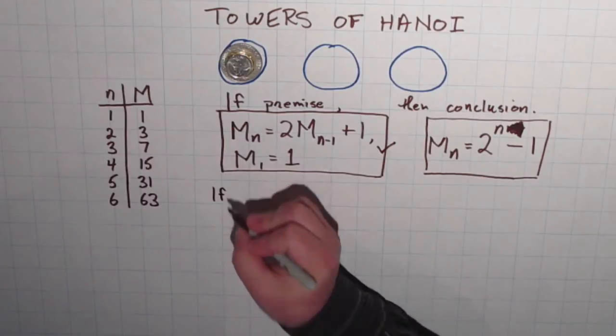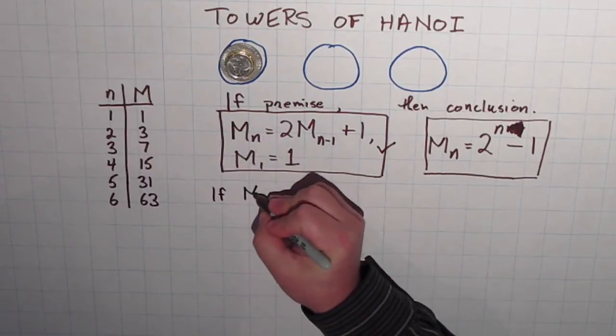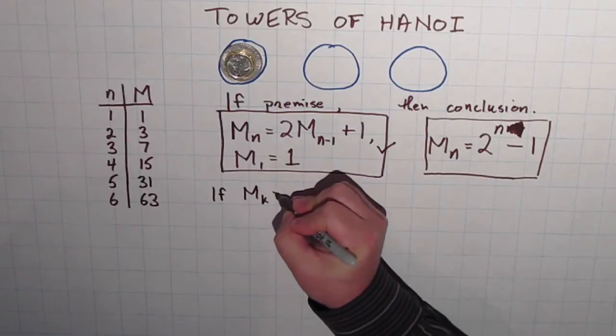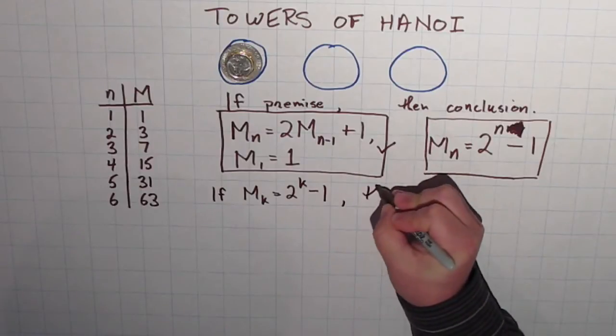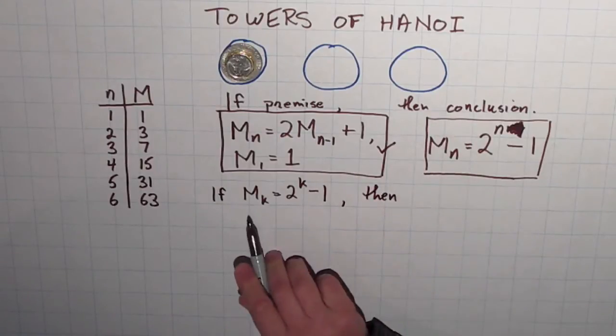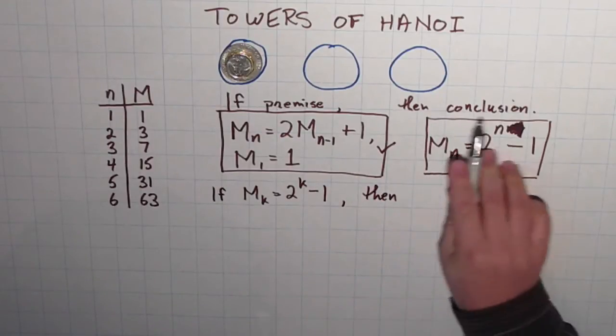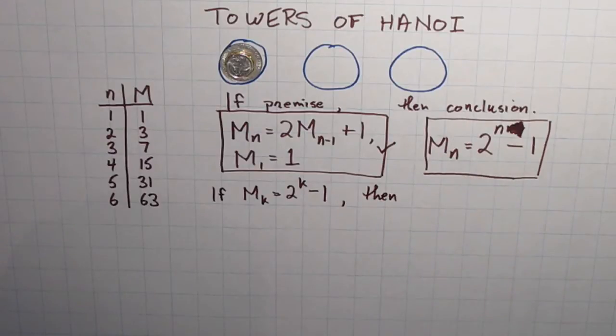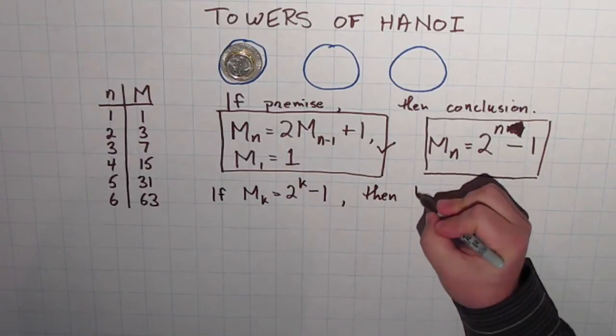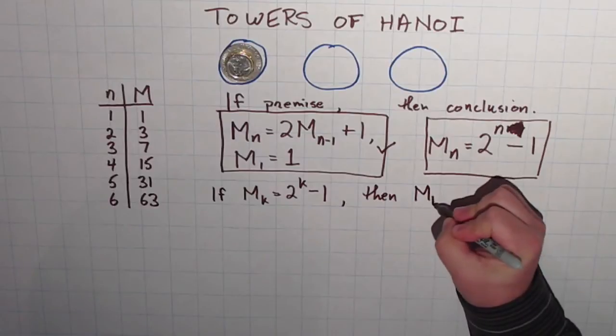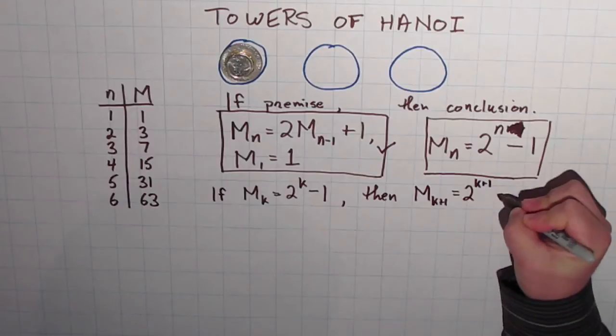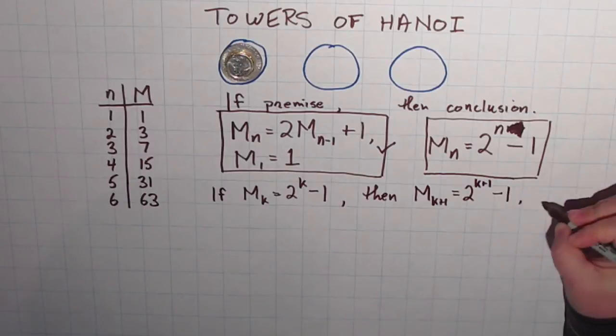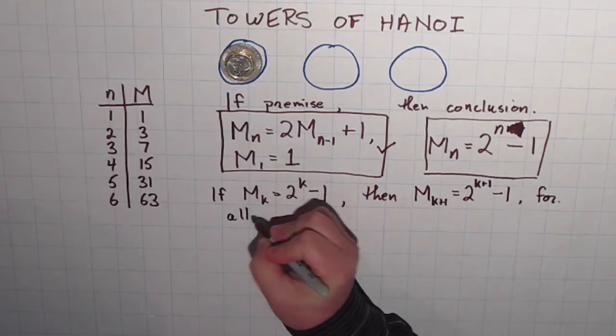I want to prove this statement. If M_k equals 2 to the k minus 1, then. And notice, by the way, all I did here was take the formula that we want to prove and replace the n with a k. Then, M_(k+1) is equal to 2^(k+1) minus 1 for all k.